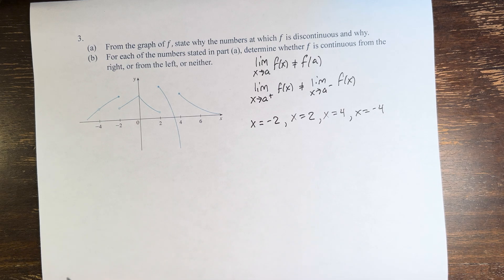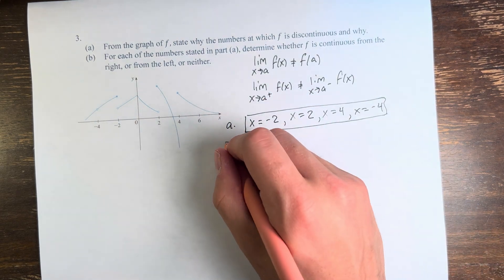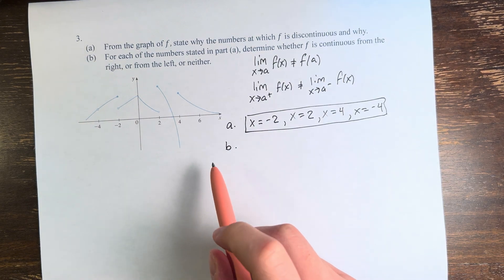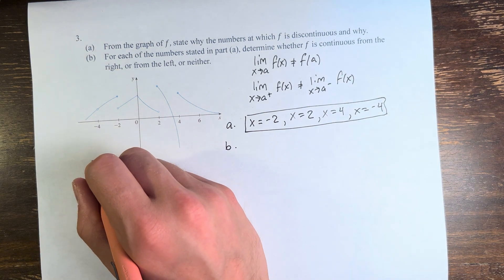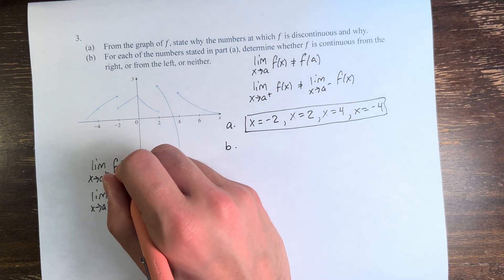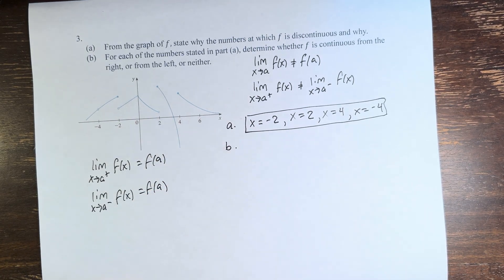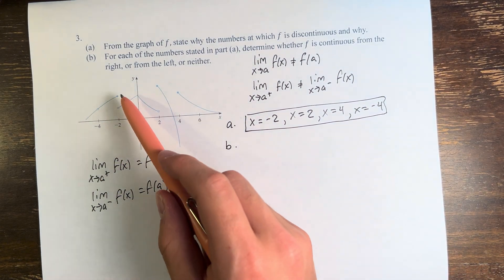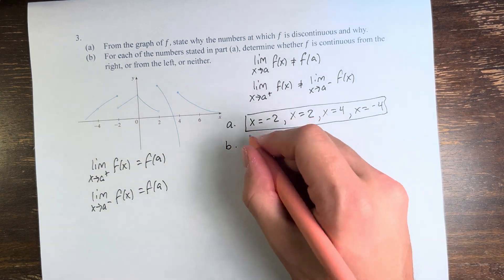So we have these four values, and in part b we're asked whether they are discontinuous from the left, the right, or neither. For a function to be continuous from the right or left at a point, the one-sided limit must equal the value of the function there. Starting with x equals negative 2: when we're coming from the left, we're approaching a solid circle, which means the function's value is right there. So it is continuous from the left.